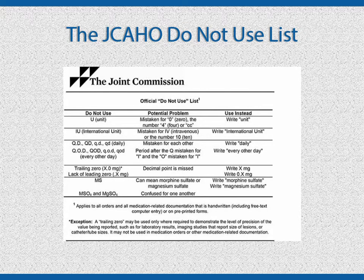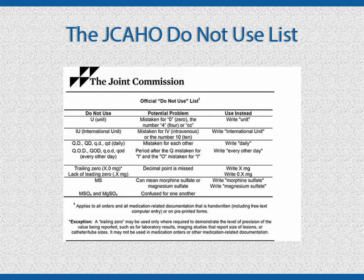If you are not paying close attention, you can miss the decimal point when reading a whole number written as 2.0 rather than 2. The danger is that there is a big difference between 2 mg and 20 mg. Never use a trailing zero unless it demonstrates precision, such as in a laboratory report — for example, creatinine equals 1.0. On the flip side, you should always use a leading zero before the decimal. This draws attention to the fact the number is a fraction, not a whole number. There is a huge difference between 0.25 mg and 25 mg — that leading zero is extremely important.